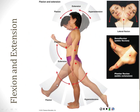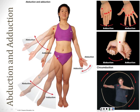Flexion and extension: flexion is a reduction in the angle between two bones; extension is an increase. There's lateral flexion, and plantar and dorsiflexion for the foot. There's abduction and adduction — moving away from the midline of the body is abduction, coming back in is adduction.